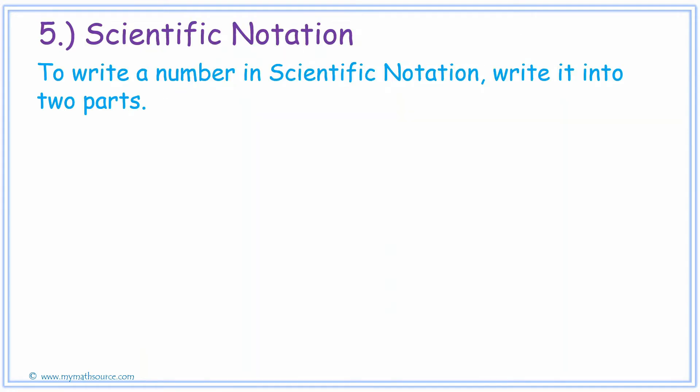Let's continue in your lecture work packet to number 5. To write a number in scientific notation, we need to write it into two parts. The first part is to write the number as a number between 1 and 10.